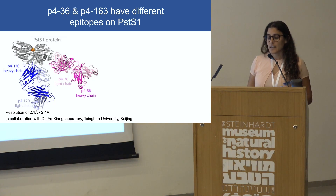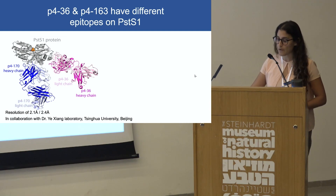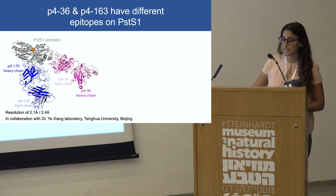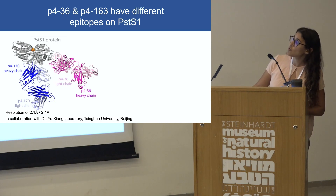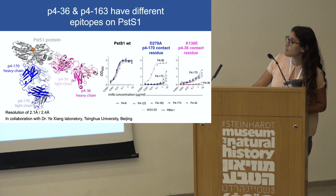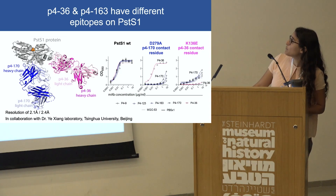To further understand the interaction between the antibodies and the antigen PSTS1, our collaborators from the Xiyang Laboratory in Beijing constructed a co-crystal of our antibodies and the antigen. You can see two structures superimposed on one another, and you can appreciate that the two antibodies bind different regions on PSTS1. When we further validated this binding, we generated PSTS1 proteins with point mutations in the contact residues of the antibodies. There is reduction in all clonal antibodies of P470 when mutating its contact residues, and a similar reduction in P436 when doing the same to its residues.